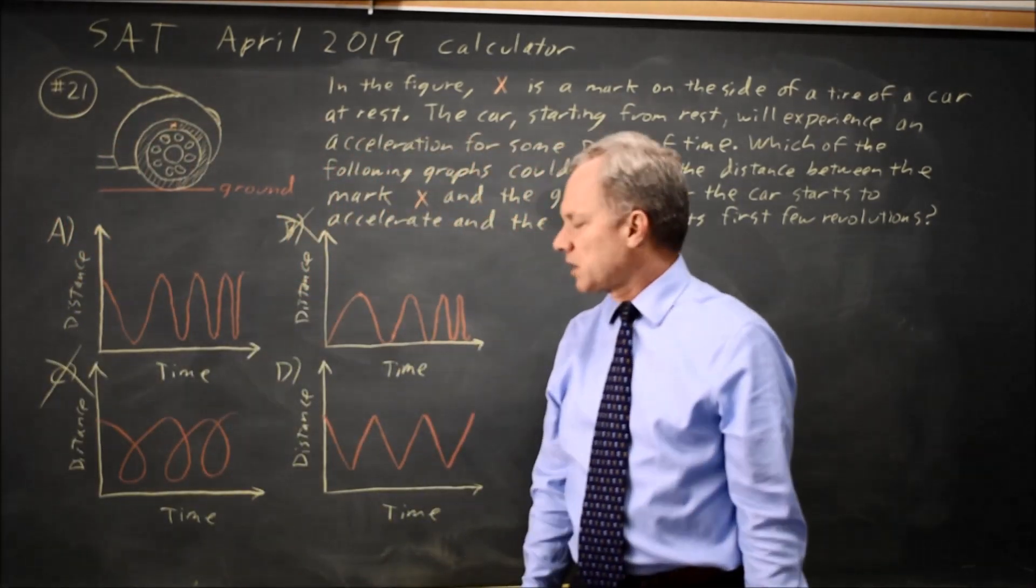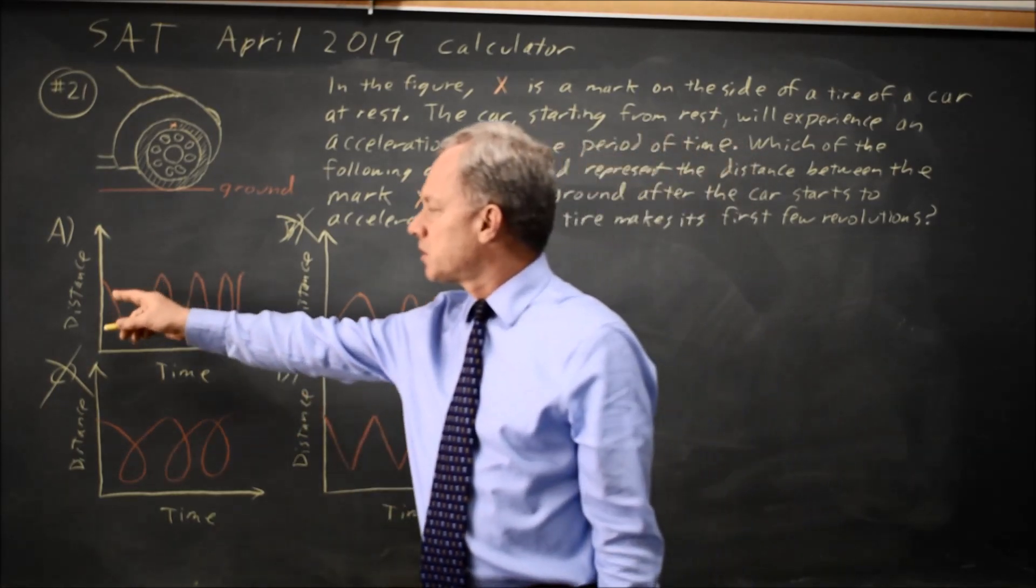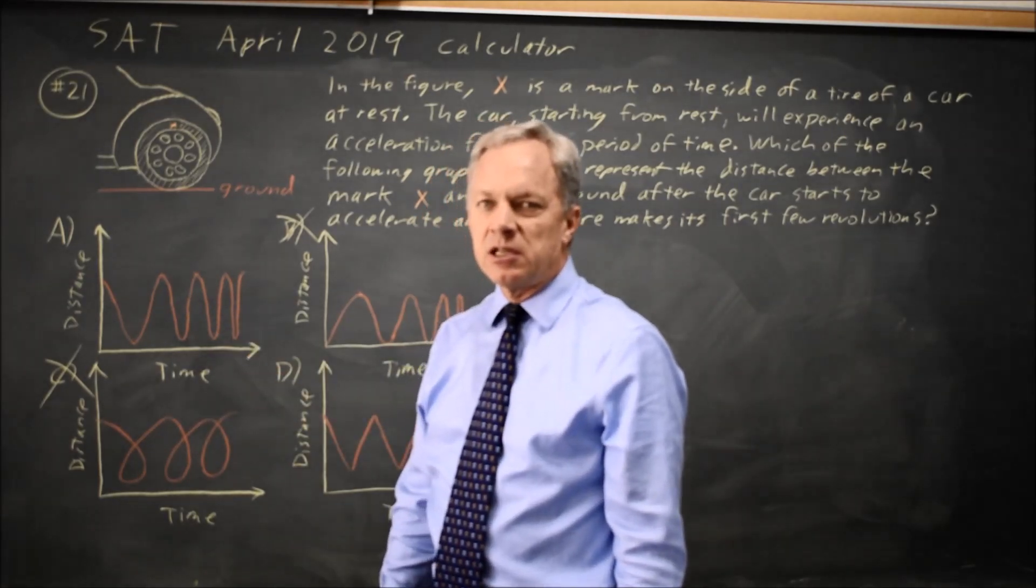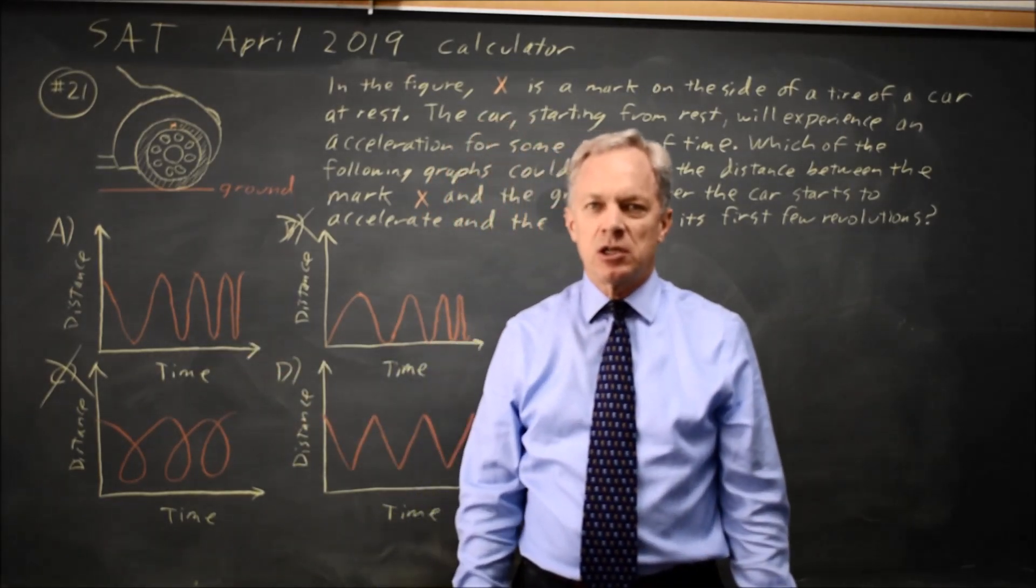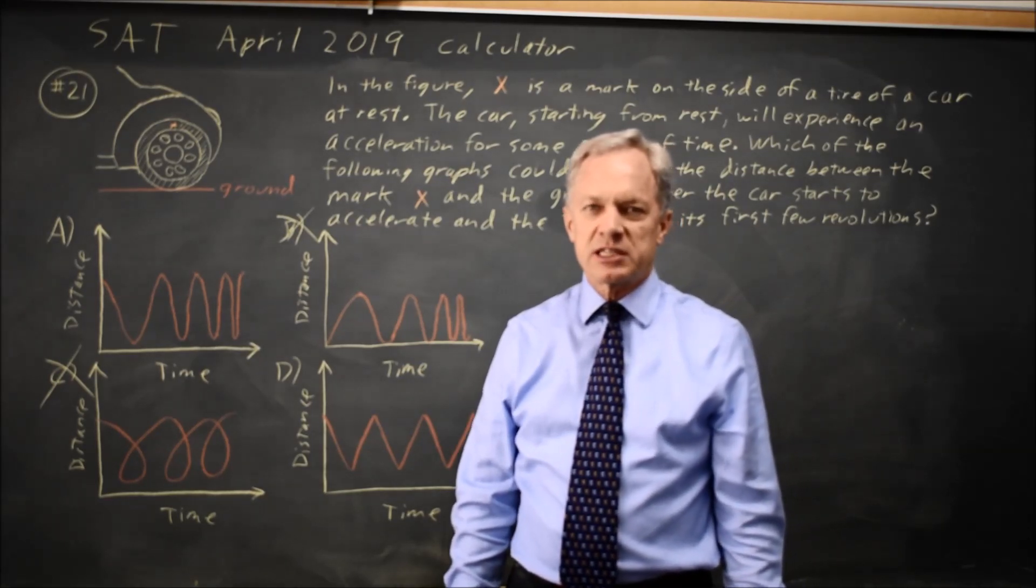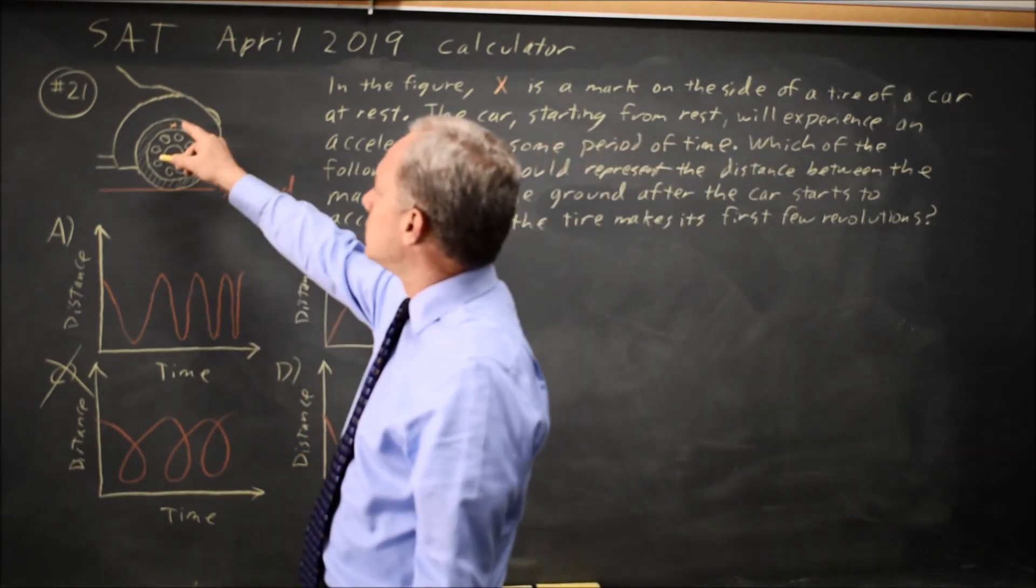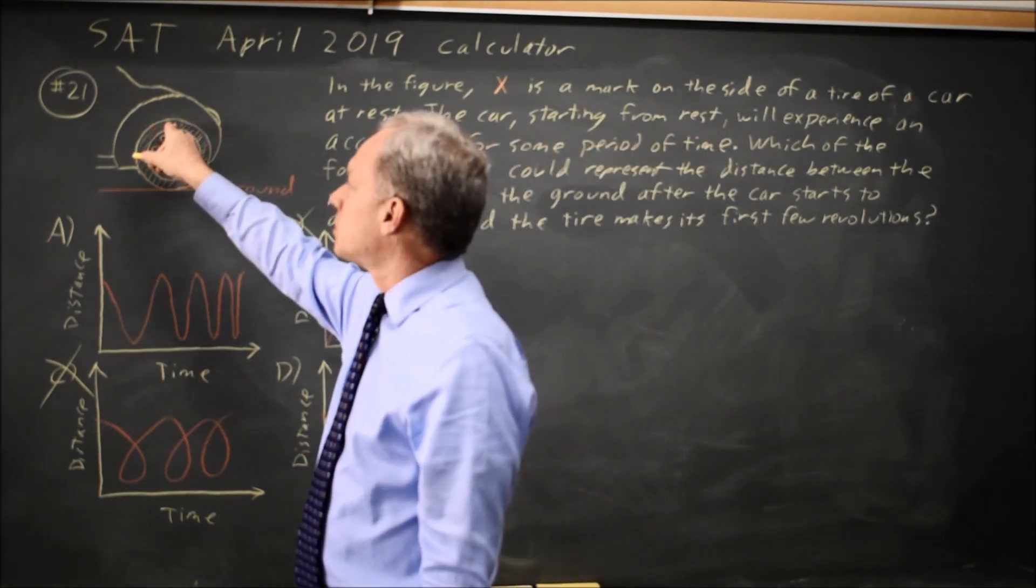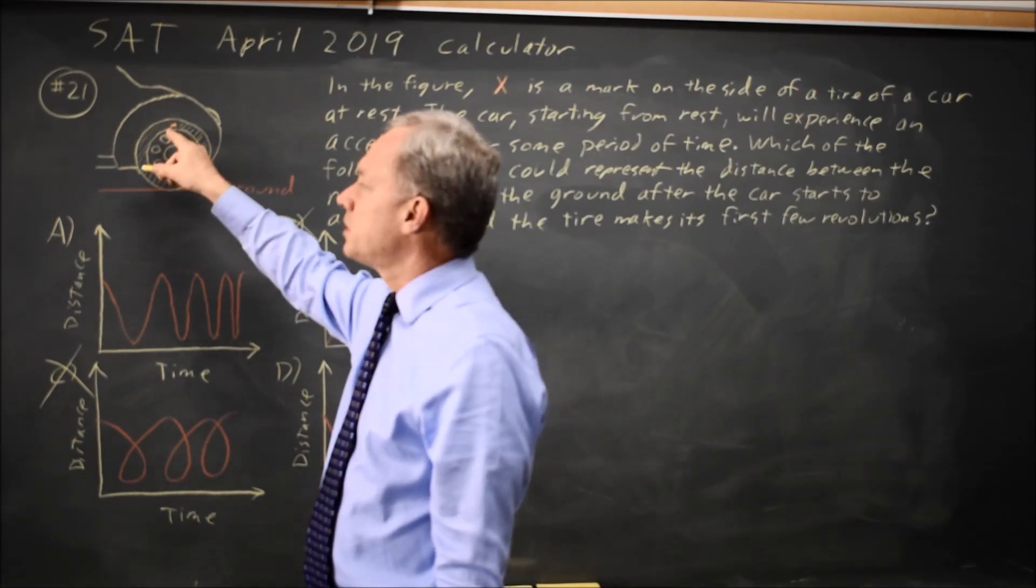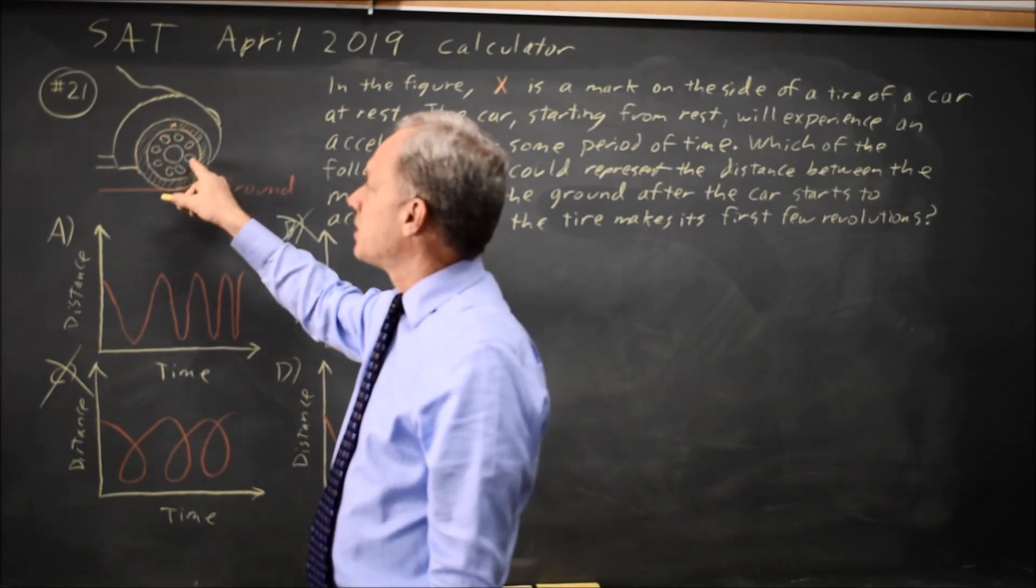The question is, is the height of the mark above the ground a zigzag like choice D, or is it a curve where the waves get closer together like choice A? Since the car is accelerating, we expect the motion of the mark to be compressed as the car accelerates. Also, if you look at the height of this mark as the mark rotates through its top point, the height of the mark is changing comparatively slowly, and the same when the mark is near the ground.